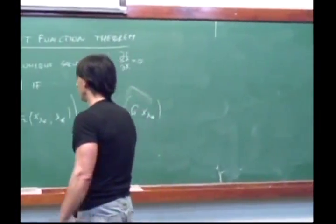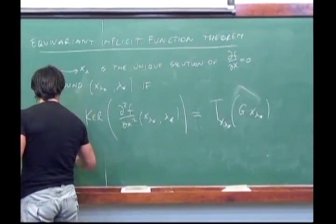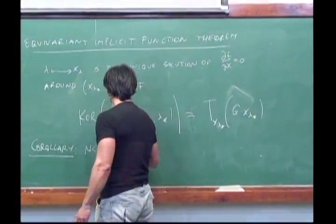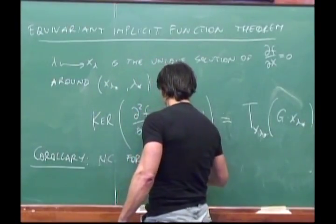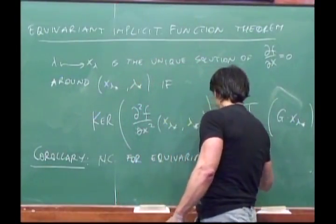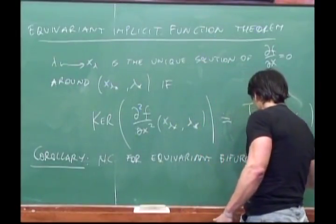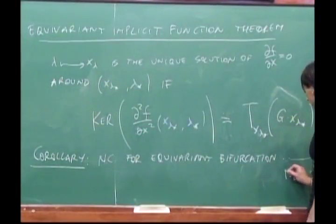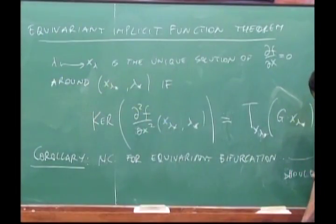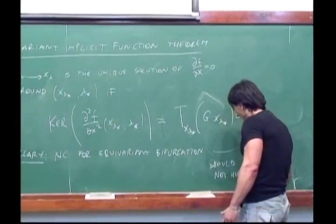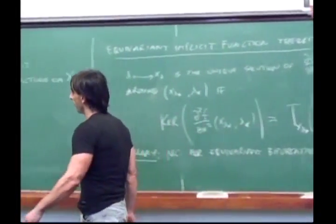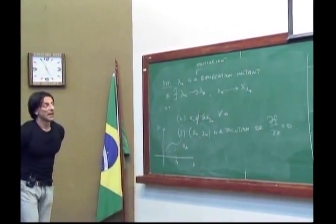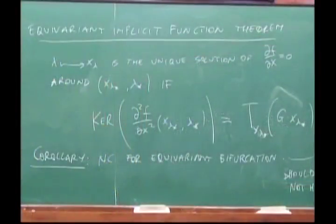A corollary is that a necessary condition for equivariant bifurcation is that this equality should not hold — meaning the kernel is strictly larger than the tangent space to the orbit. So to determine bifurcation, I have to look at examples where the second derivative of the functional has kernel which is bigger than the tangent space to the orbit.